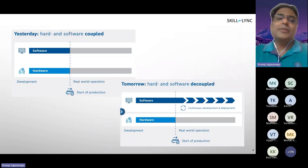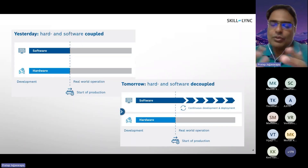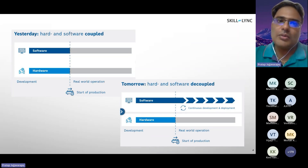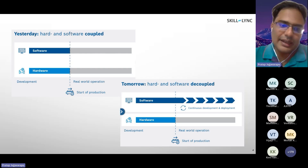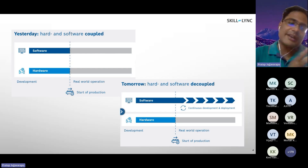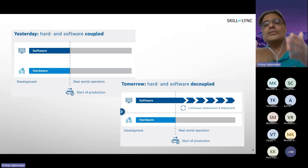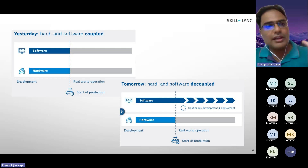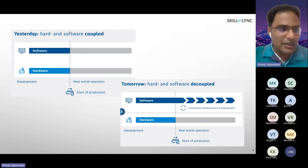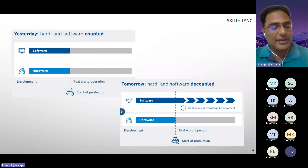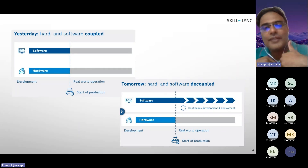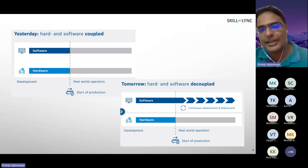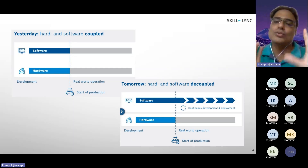To enable this particular software-defined vehicle, let us go into the architecture. Looking at the architecture, the key difference between traditional vehicle development and tomorrow's software-defined vehicle is one very predominant thing: the coupling of hardware and software. In today's traditional vehicle, software and hardware are tightly coupled. But in tomorrow's software-defined vehicle, the software and hardware are loosely coupled or decoupled.